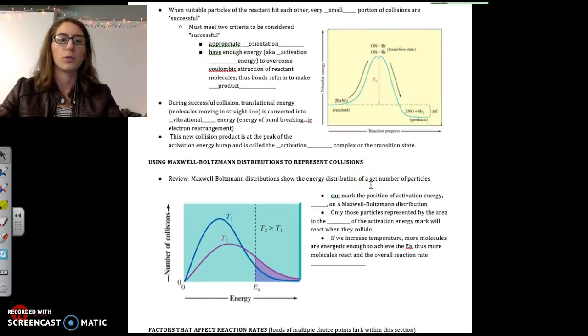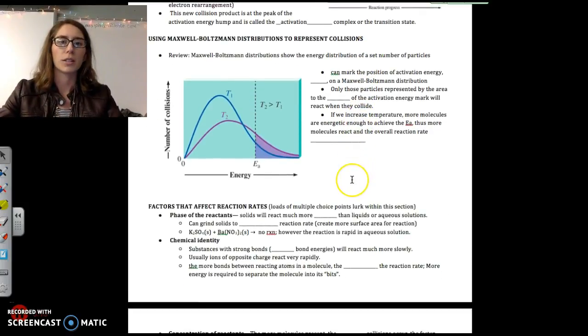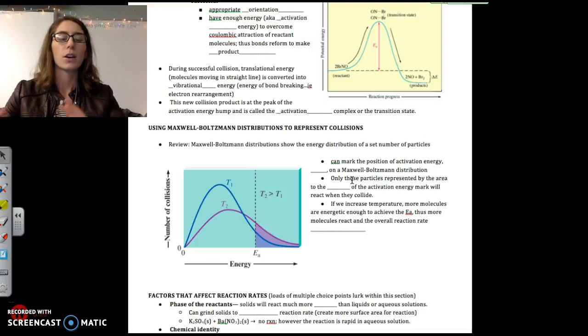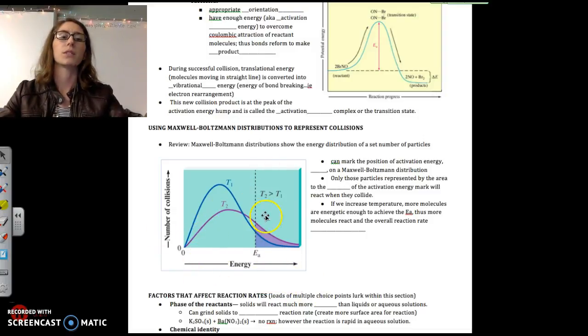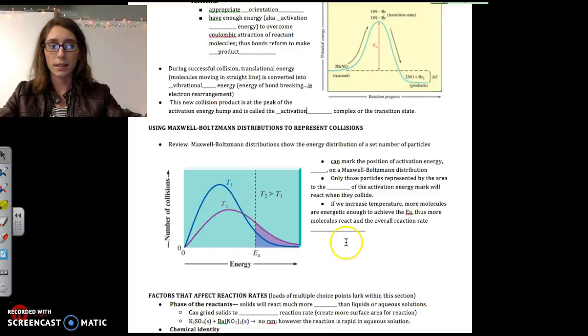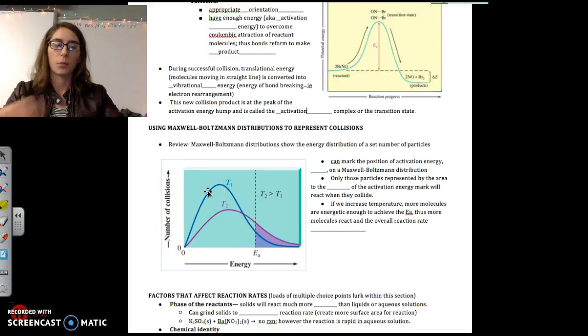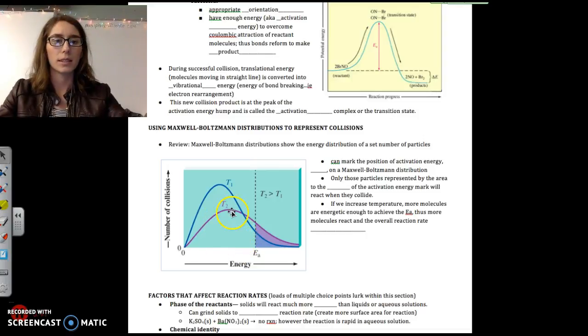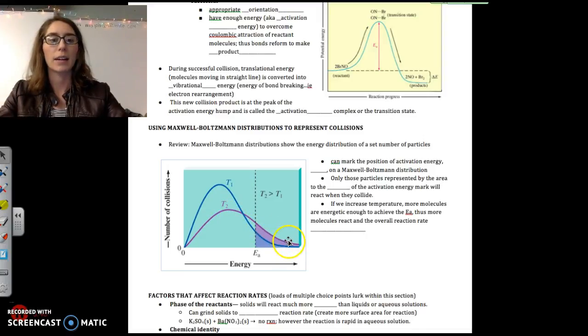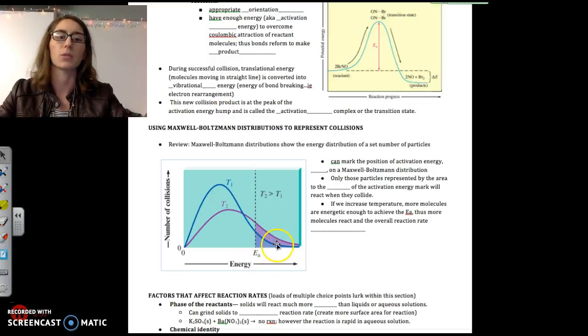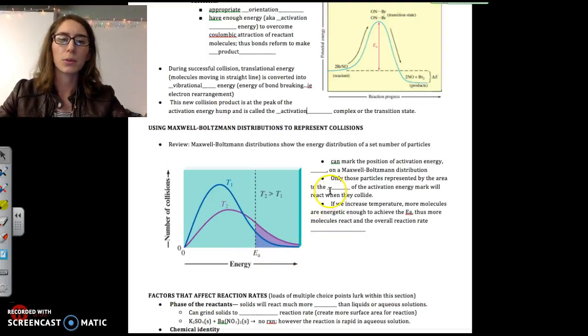Now using Maxwell-Boltzmann distributions to represent collisions. If you remember back to our discussion of gases, we did a lot with Maxwell-Boltzmann distributions, and we can actually apply those same sorts of graphs to reactions. So we're going to see these again in this chapter. Maxwell-Boltzmann distributions show the energy distribution on the x-axis versus the number of particles in your sample on the y-axis. As you increase the temperature, we get a shift in the graph. So the hump sort of levels out, and we see more molecules with a higher energy. But remember, in a sample, we report the average temperature, even though there's a wide range of temperature. Very small amounts of molecules have the highest temperatures.